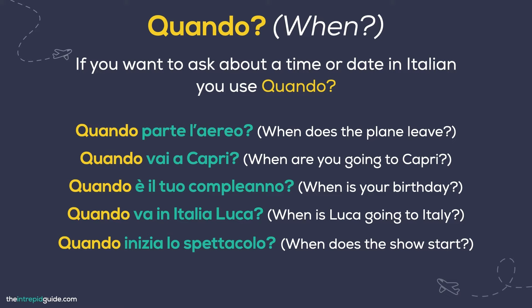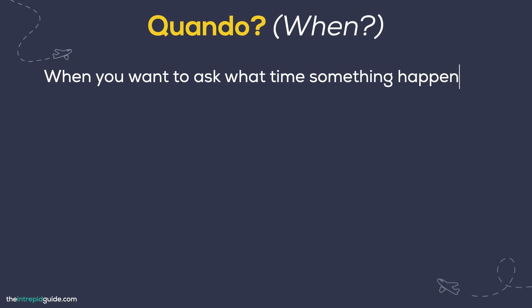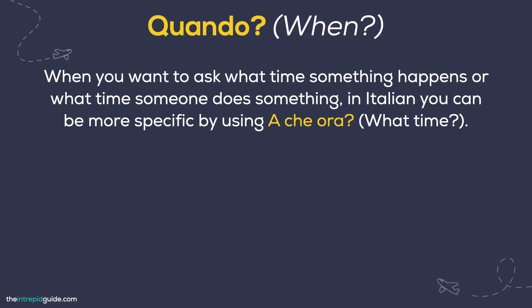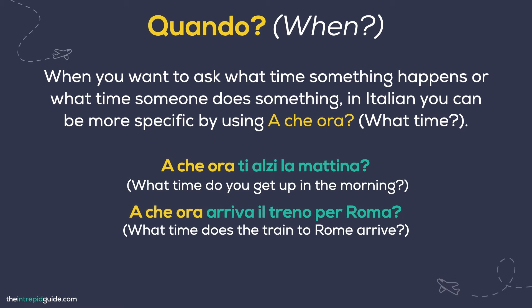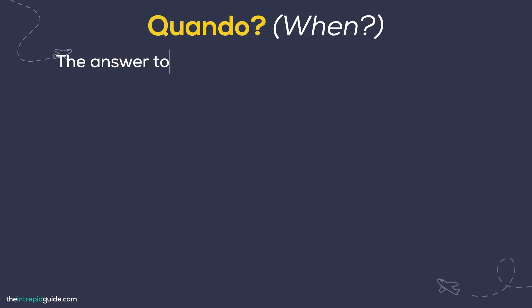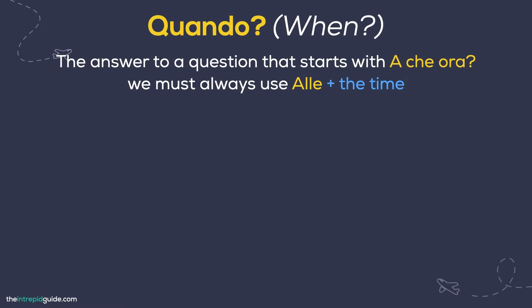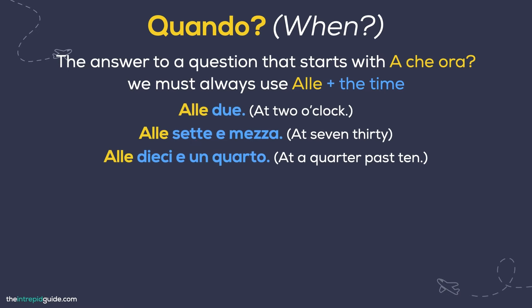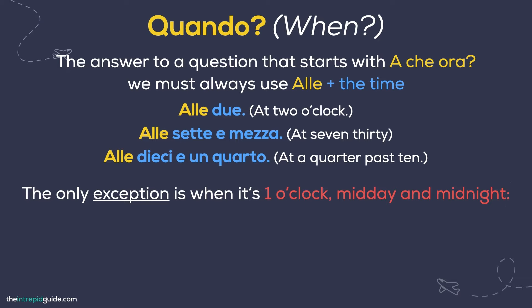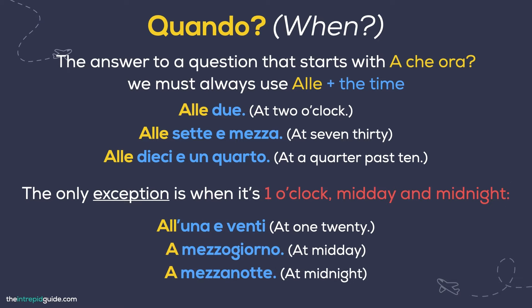When you want to ask what time something happens, in Italian you can be more specific by using A che ora? — at what time, or what time? Here are some examples: A che ora ti alzi la mattina? What time do you get up in the morning? A che ora arriva il treno per Roma? What time does the train to Rome arrive? To answer a question that starts with a che ora, we must always use alle plus the time. For example: Alle due — at two o'clock. Alle sette e mezza — at seven thirty. Alle dieci e un quarto — at a quarter past ten. The only exception is when it's one o'clock, midday, or midnight: All'una e venti — at one twenty. A mezzogiorno — at midday. A mezzanotte — at midnight.